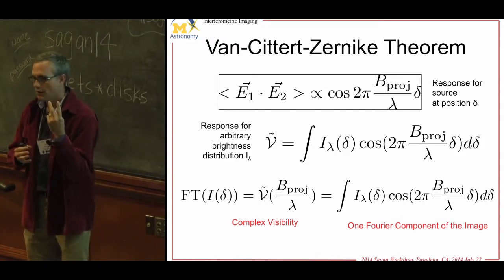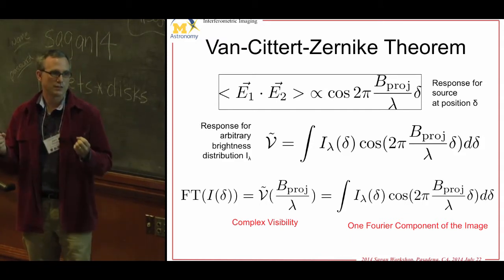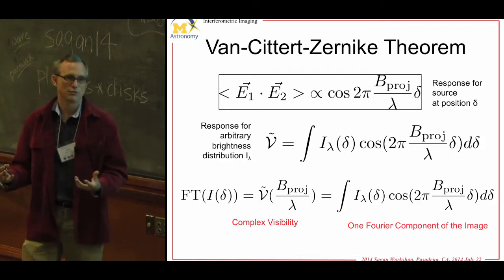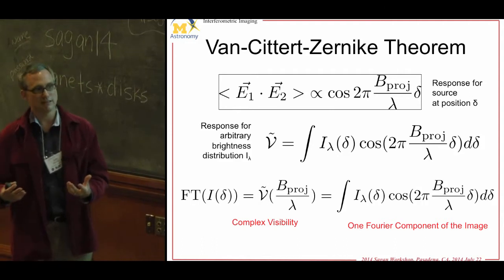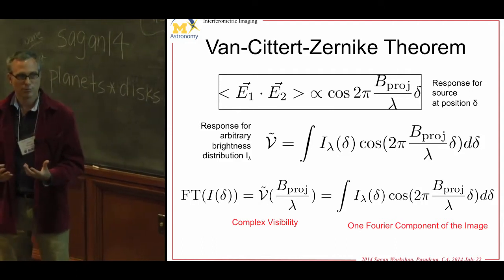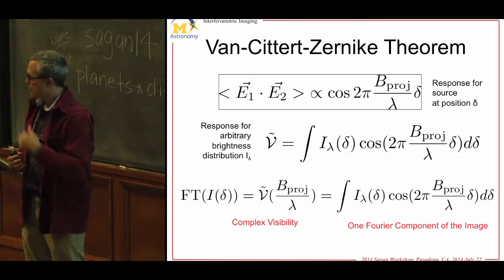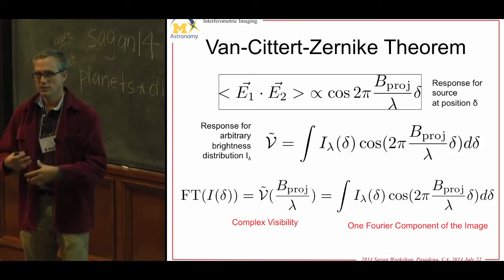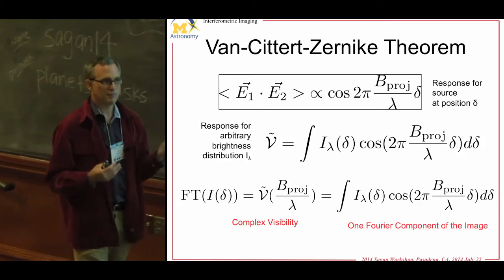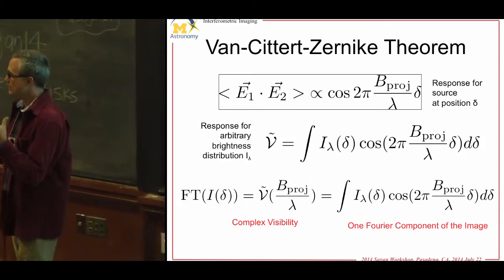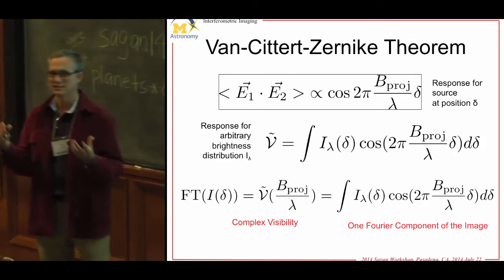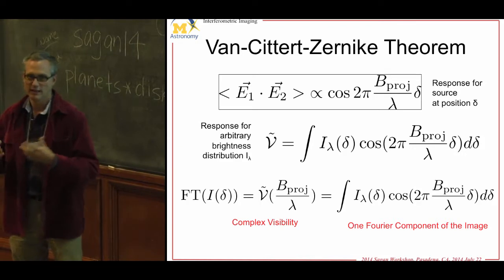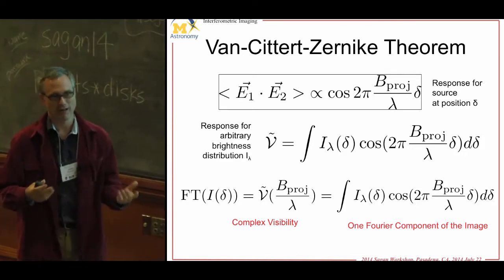You have to combine many different baseline configurations — different angles on the sky and different separations — so you can do an inverse Fourier transform to get the image back. If you want true imaging with an interferometer, you need many baselines to invert the problem. If you have 100 independent things going on in your image, you need at least 100 individual baselines — from an information theory perspective, usually more because you don't get the right ones.